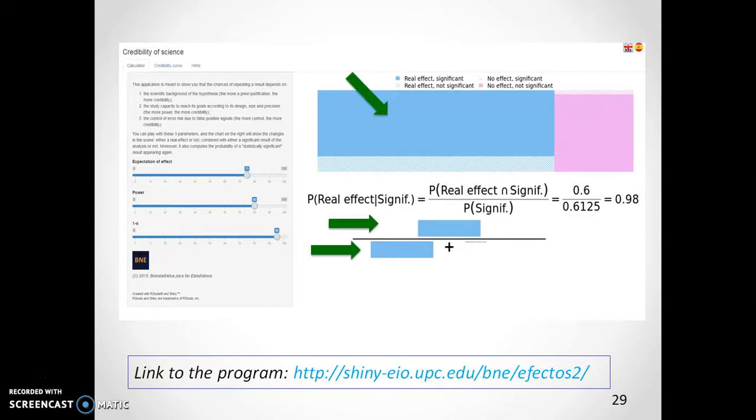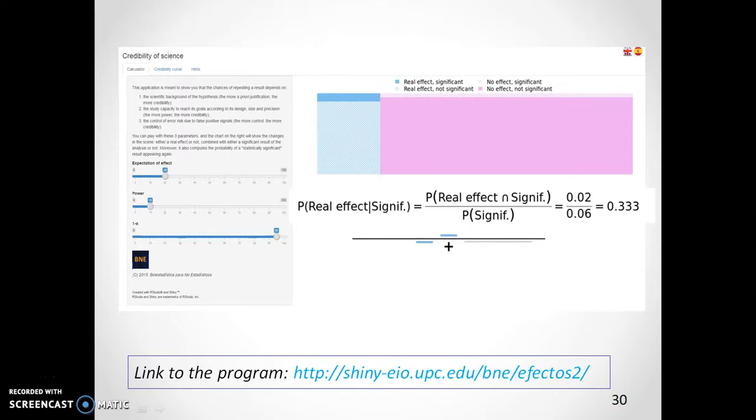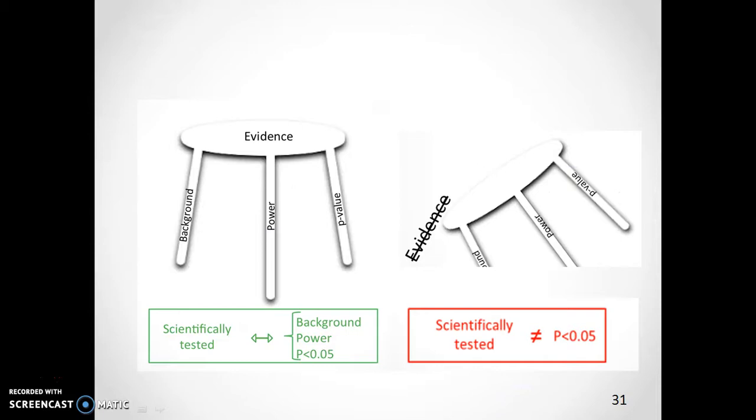Thus, when we gather all the significant effects in the lower quotient, we see that 98% come from real effects. That sounds good. But if we lower the expectation of the true effect to 20% and the power to 10%, even with the same p-value, significant results coming from real effects fall down to 33%. Consequently, we have seen how important each leg is. If we do not guarantee power and a strong background, a significant p-value alone does not support the evidence.